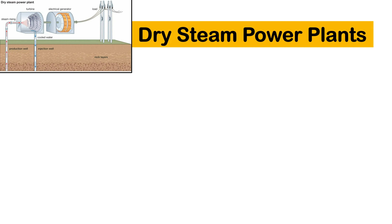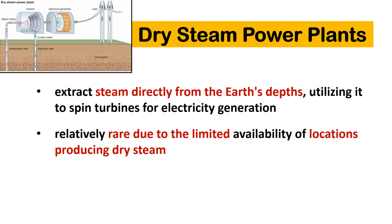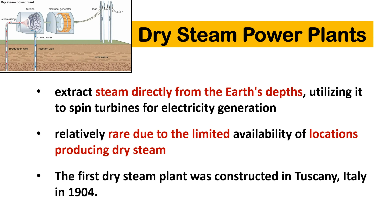Dry steam power plants extract steam directly from the earth's depths, utilizing it to spin turbines for electricity generation. These plants are relatively rare due to the limited availability of locations producing dry steam. The first dry steam plant was constructed in Tuscany, Italy in 1904.